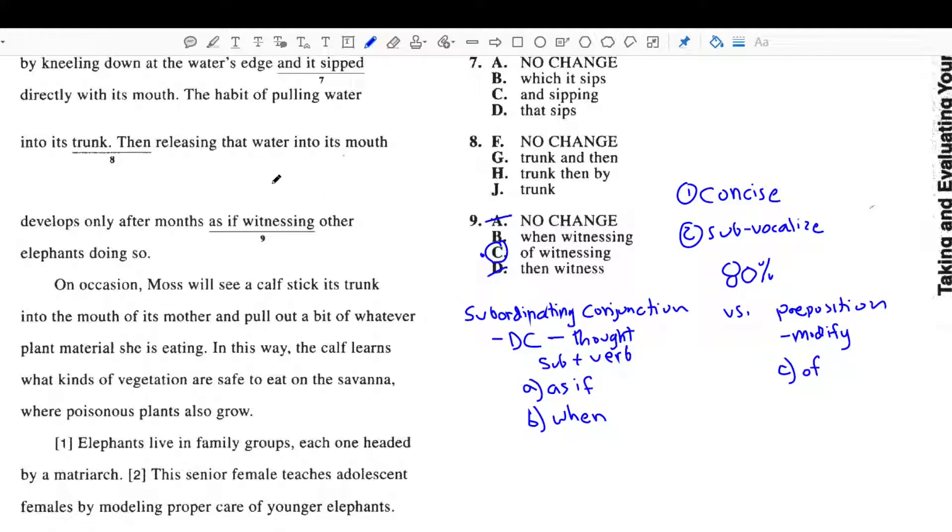So, when I'm reading this sentence, and if you recall when question 8 actually combines these two fragments together. The habit of pulling water into its trunk. The answer was, I think, G and then. So, I put an and here. And, get rid of that. The habit of pulling water into its trunk and then releasing that water into its mouth develops only after months of witnessing other elephants doing so.